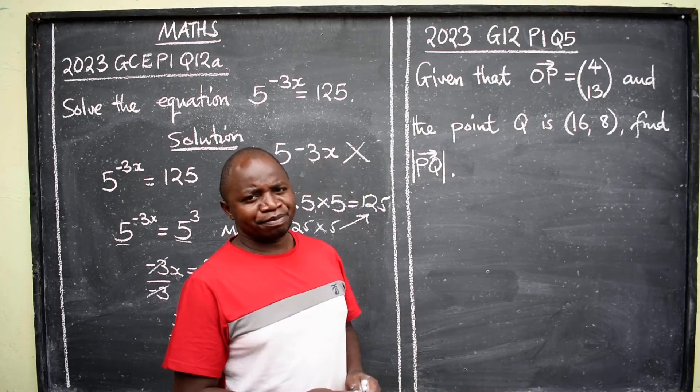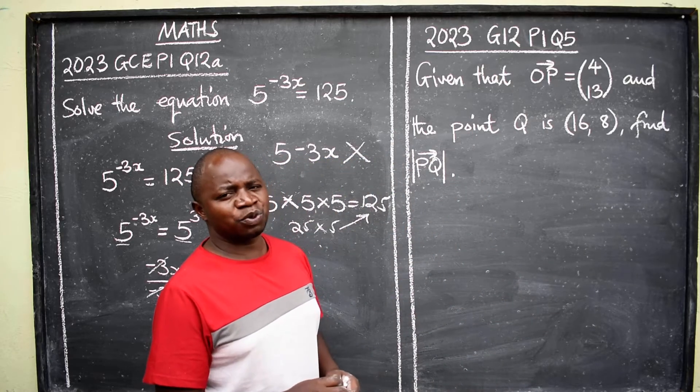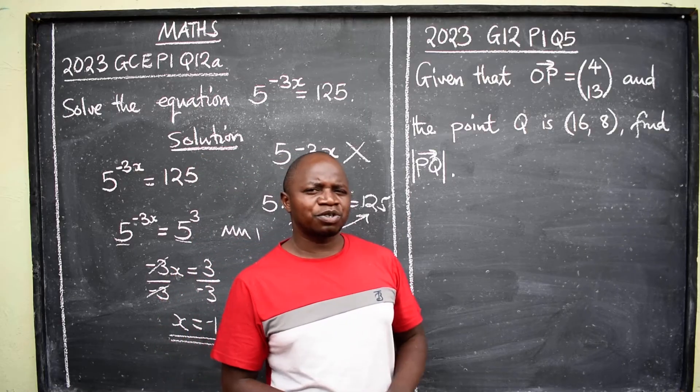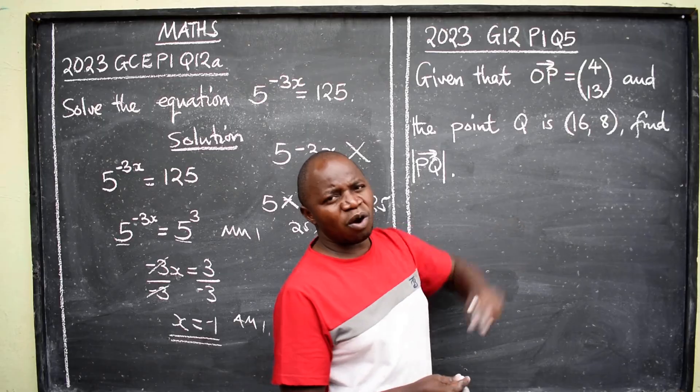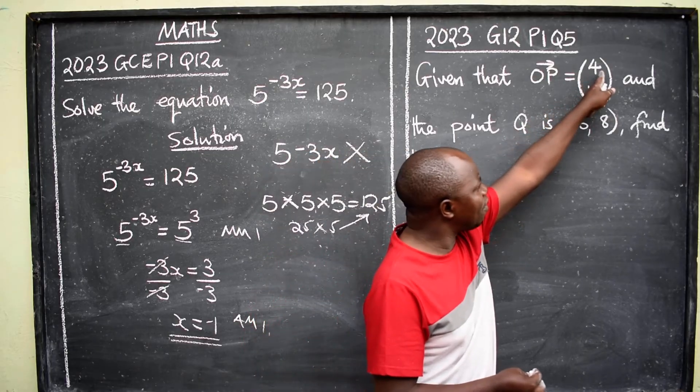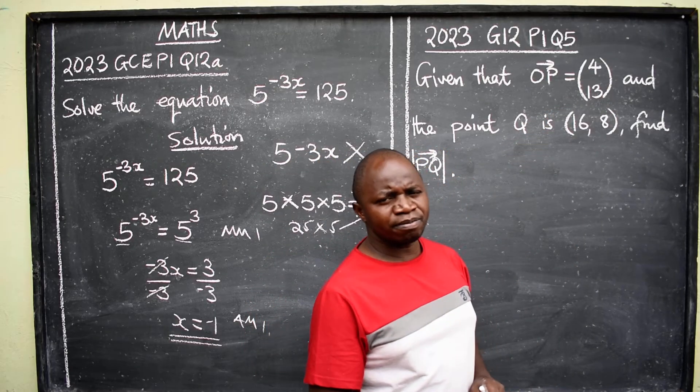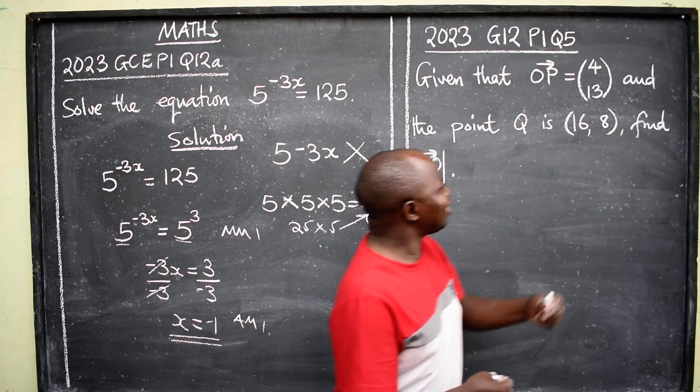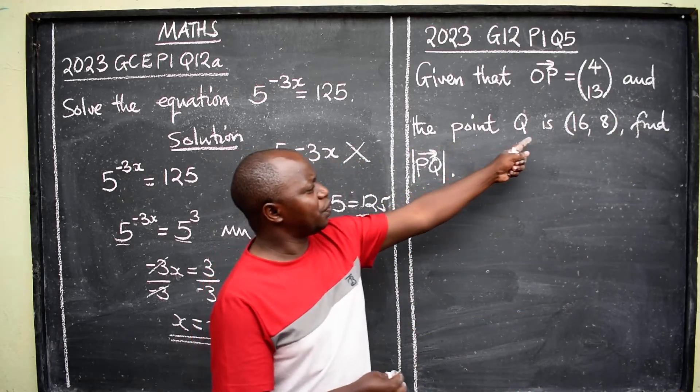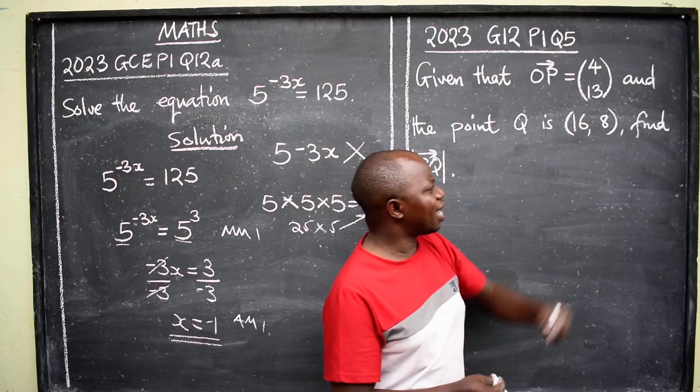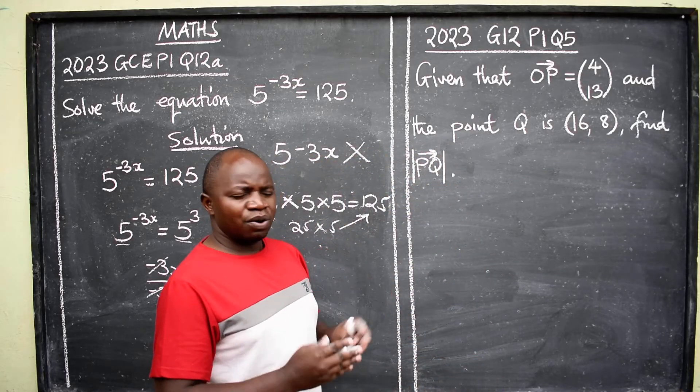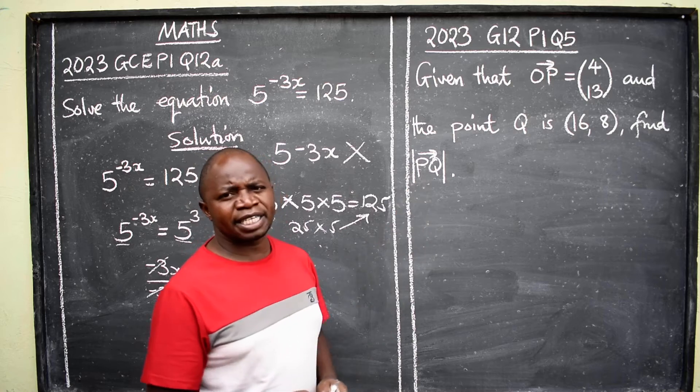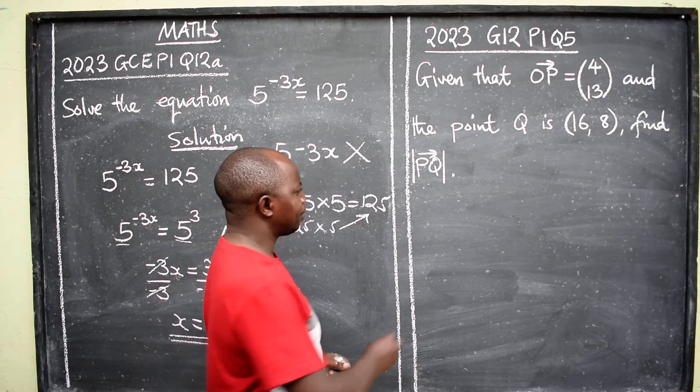We move on. 2023 grade 12 paper 1, this was question number 5. Given that vector OP is equal to 4, 13 in column form, and the point Q is 16 comma 8, find the magnitude or the modulus of the vector PQ. Solution.